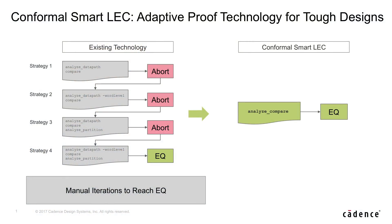With a single command, Smart Lag analyzes the design and executes the best strategy to complete the comparison. The strategy is different for different parts of the design, and the result is effectively a fine-grain strategy customization that is very difficult or nearly impossible to replicate manually.